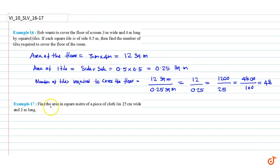Example 17: Find the area in square meters of a piece of cloth 1 meter 25 centimeters wide and 2 meters long.